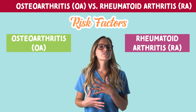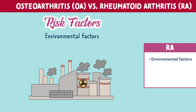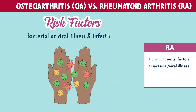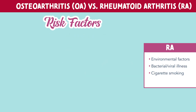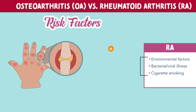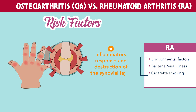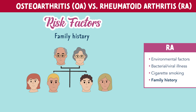Now let's look at the risk factors for RA. These include environmental factors such as pollution, which enters the system and causes inflammation; bacterial or viral illnesses and infection; and cigarette smoking. What do all of these have in common? They all can cause an inflammatory response and destruction of the synovial layer — this is the protective joint fluid. A family history of RA is also a risk factor.